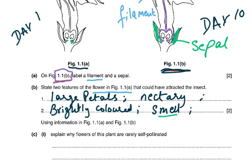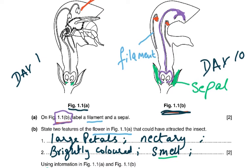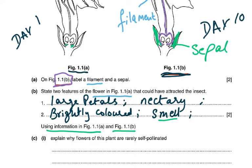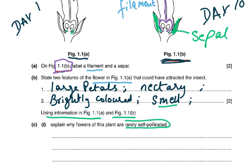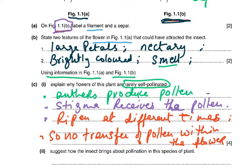Then it says explain — using information from figures 1.1a and 1.1b — why the flowers of this plant are rarely self-pollinated. The anthers in 1.1a are mature but shriveled in 1.1b. Self-pollination means pollen from the anther onto the stigma of the same flower. From this diagram we can tell that anthers produce pollen and the stigma receives pollen, but they ripen at different times, so there can be no transfer of pollen within the flower.